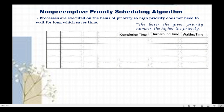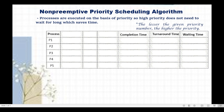We are given here five processes: P1, P2, P3, P4, and P5. The arrival times are: P1 is 2, P2 is 0, P3 is 1, P4 is 5, and P5 is 4. The priorities are: P1 is 2, P2 is 4, P3 is 2, P4 is 3, and P5 is 1. The burst times are: P1 is 5, P2 is 3, P3 is 7, P4 is 6, and P5 is 8.